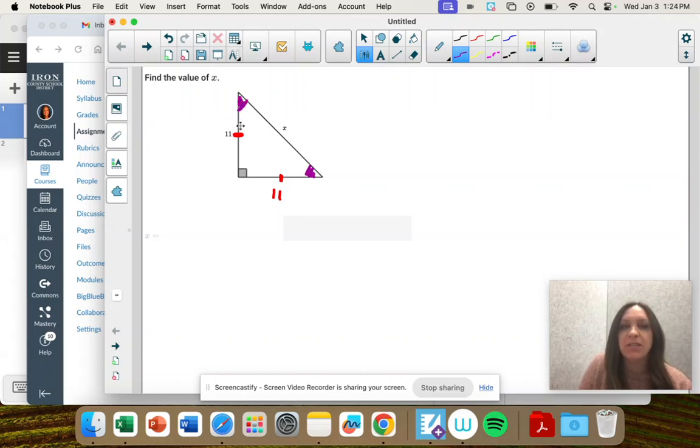And in order for them to be the same, if this is a 90 degree triangle, these are 45 degree angles. So this would be our 45-45-90 triangle.